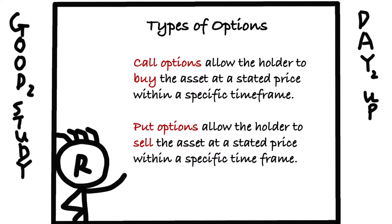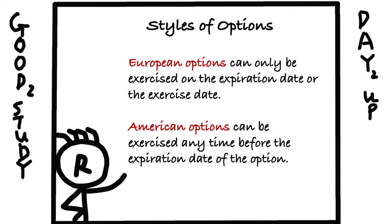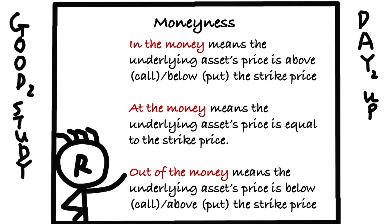There are mainly two styles of options: European style and American style. European style only allows the buyer to exercise on the expiration date, while American style allows you to exercise anytime before the expiry date. In terms of pricing, European style is generally easier to price and cheaper because it offers less choice than American style.